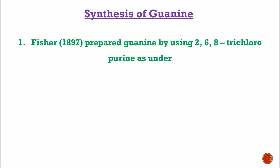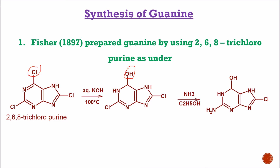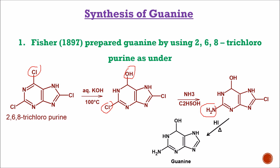Now let us see the synthesis of guanine. Fischer in 1897 prepared guanine using 2,6,8-trichloropurine. After reaction in the presence of aqueous KOH at 100°C, the Cl at carbon number 6 is replaced by an OH group. Further, in the presence of NH3 and C2H5OH, the Cl at carbon number 2 is replaced by an NH2 group. Further, in the presence of HI and heat, the final structure of guanine is formed. Guanine is 2-amino-6-hydroxypurine.